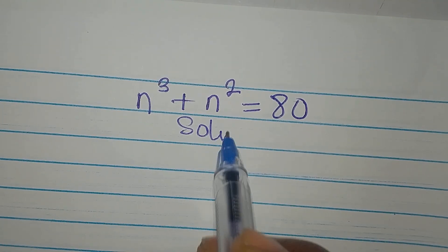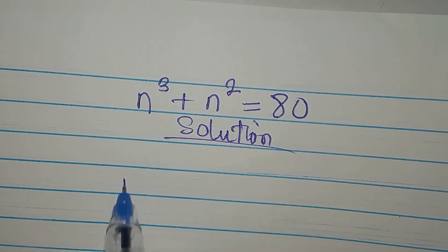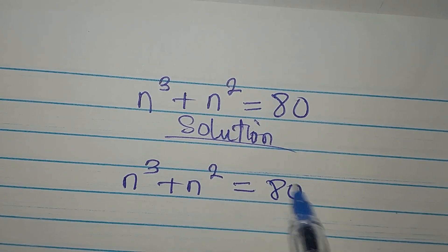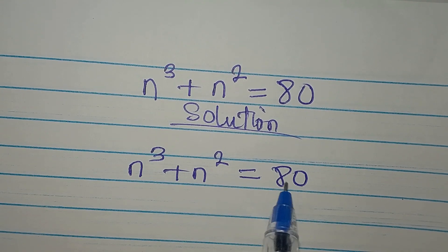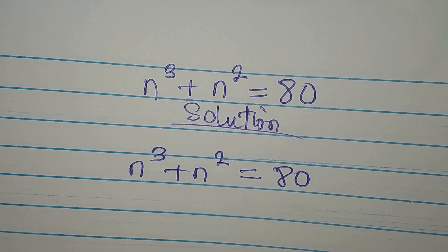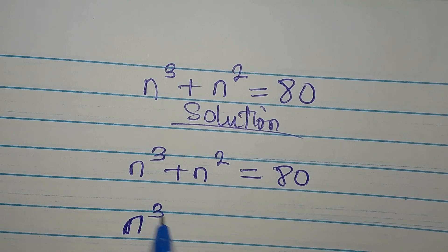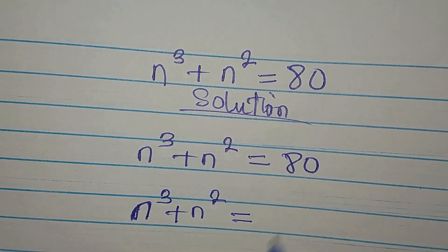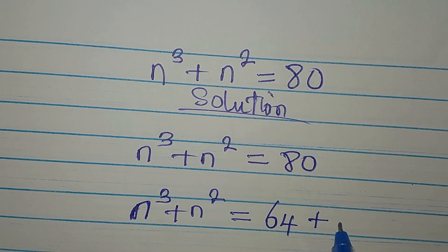Let's provide the solution to this problem: n to the power of 3 plus n to the power of 2 equals 80. This is very simple because you can express this number in a useful form. So we have n³ + n² = 80, which is 64 plus 16.